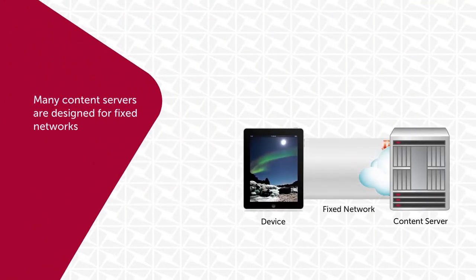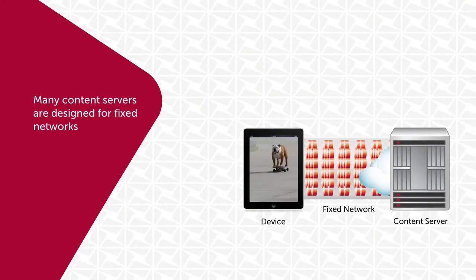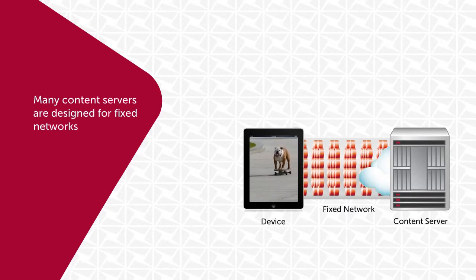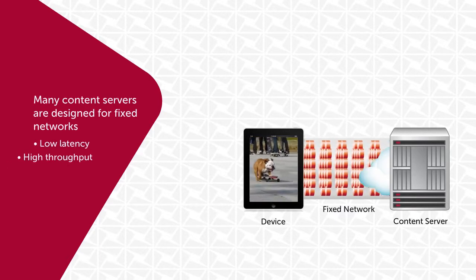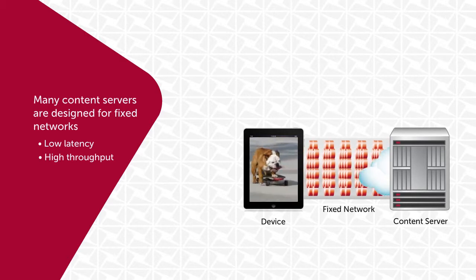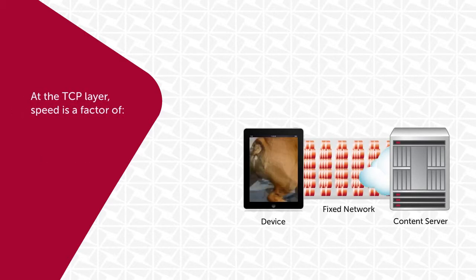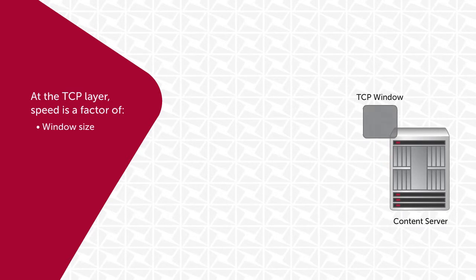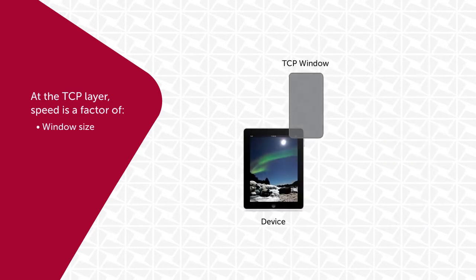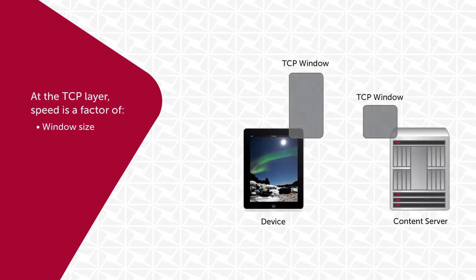Content servers are typically designed for fixed networks, which can generally be characterized as short, fat pipes with low latency and high throughput. This is particularly evident at the TCP layer, where speed is a factor of window size, which is essentially the amount of data that can be sent at one time, latency, and throughput.